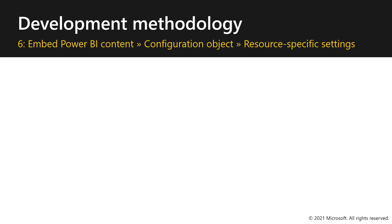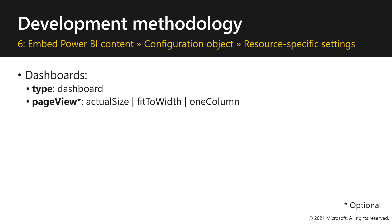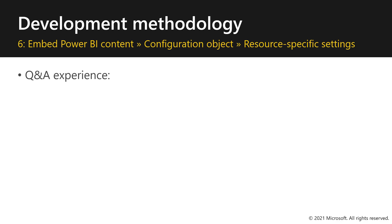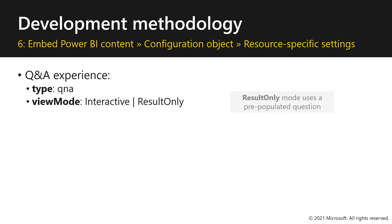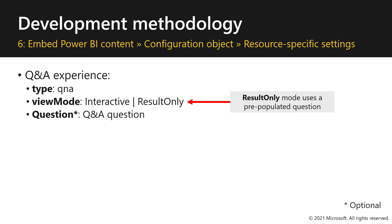There are also dashboard and dashboard tile-specific settings. For dashboards, the type is set to dashboard, and there's an optional page view: actual size, fit to width, or one column. For dashboard tiles, you set the type to tile. For Q&A-specific settings, the type is set to Q&A and you select a view mode — either interactive or result only. Result only mode uses pre-populated questions, while interactive mode allows users to input their own questions. Providing a question is optional in interactive mode but mandatory in result only mode.